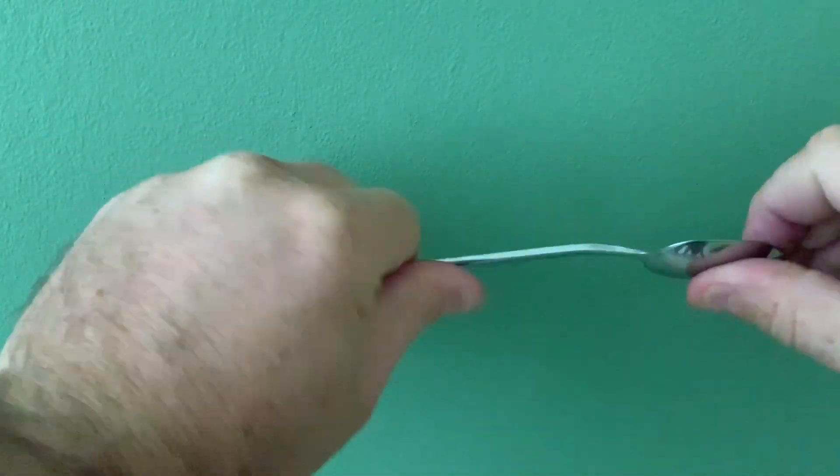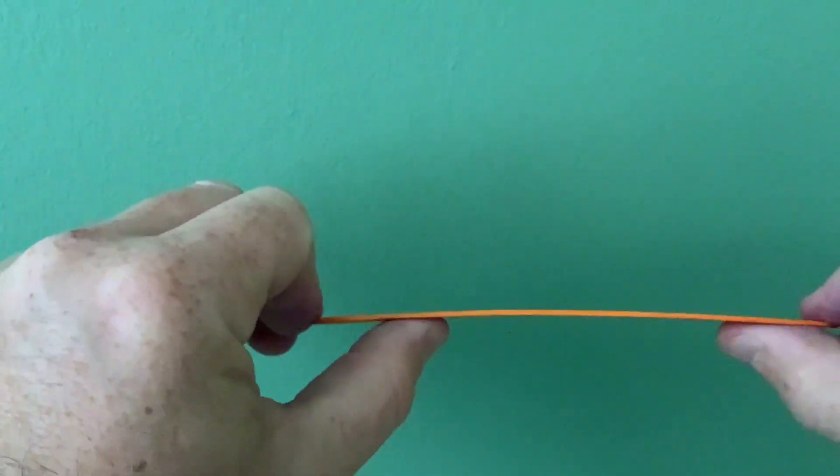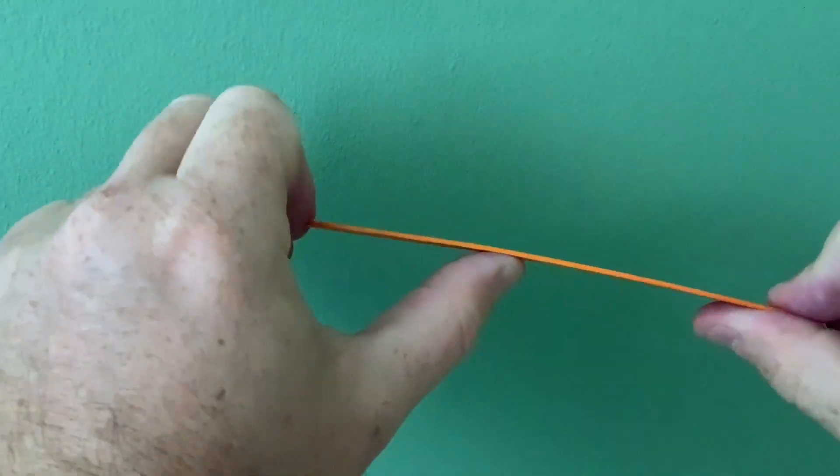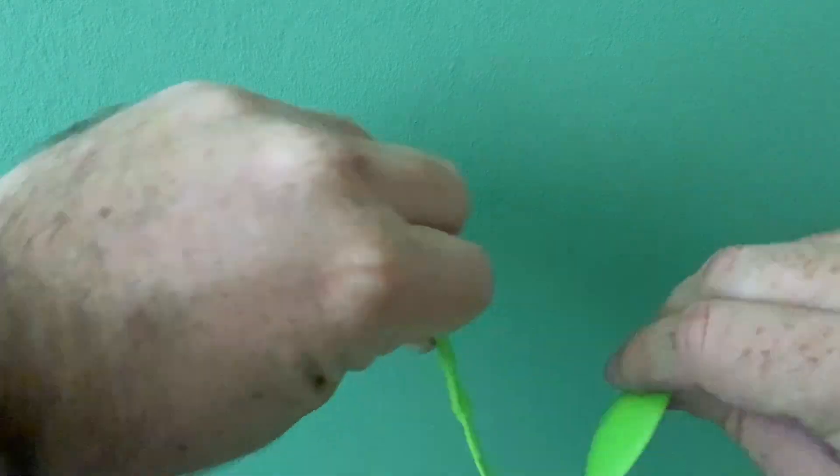This spoon is stiff. It doesn't bend. This wood is flexible but also stiff. It bends a little. This spoon is very flexible.